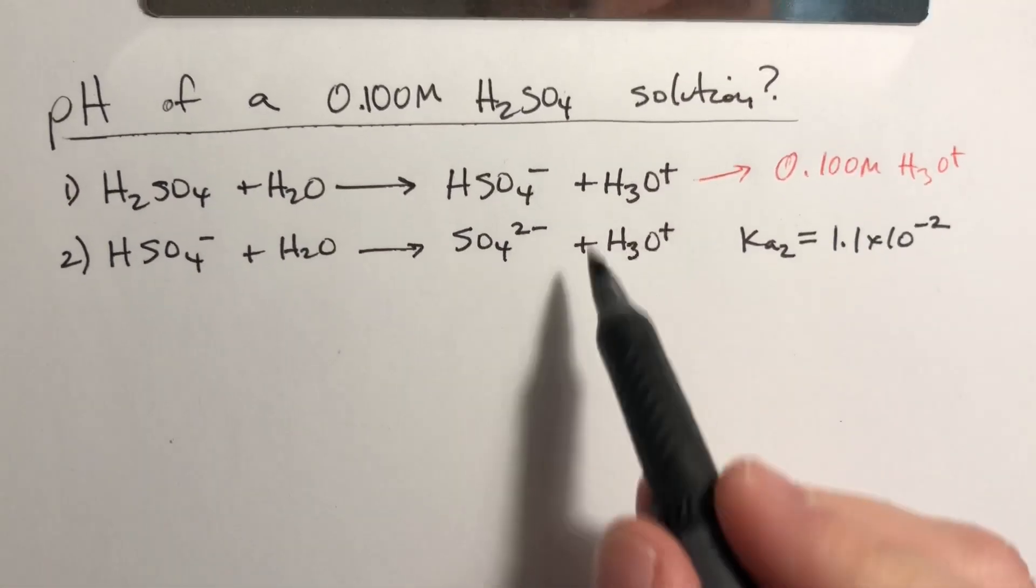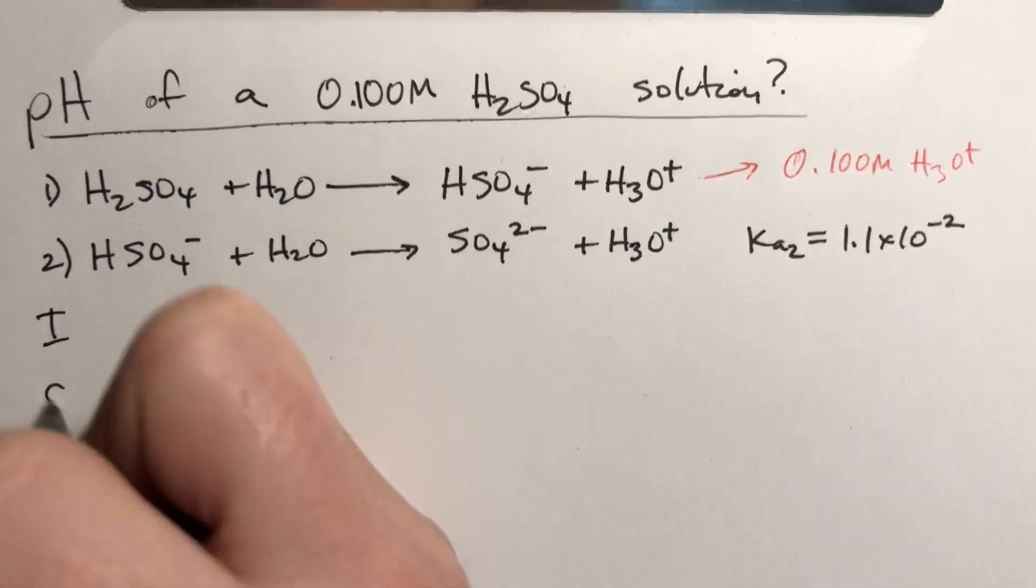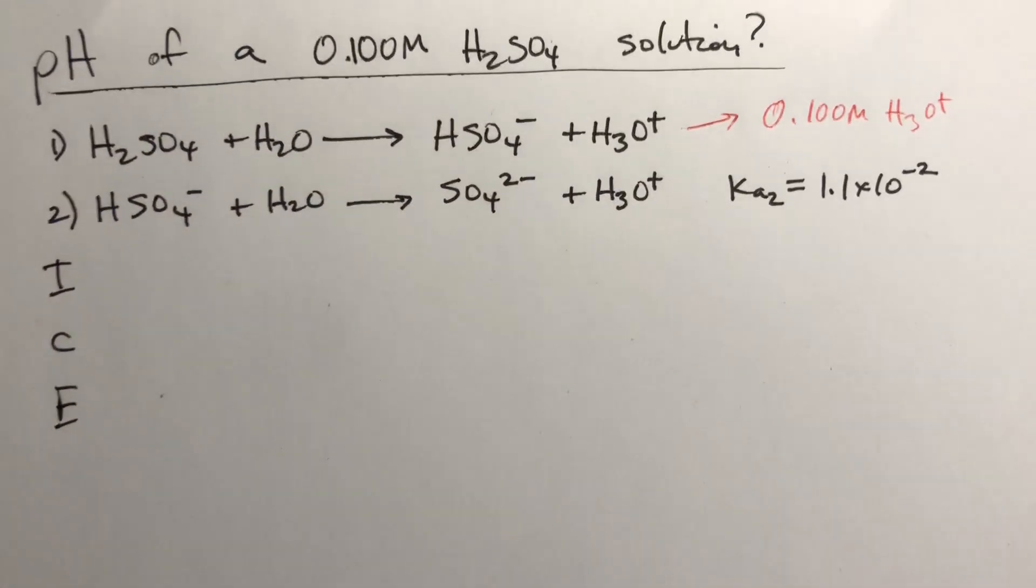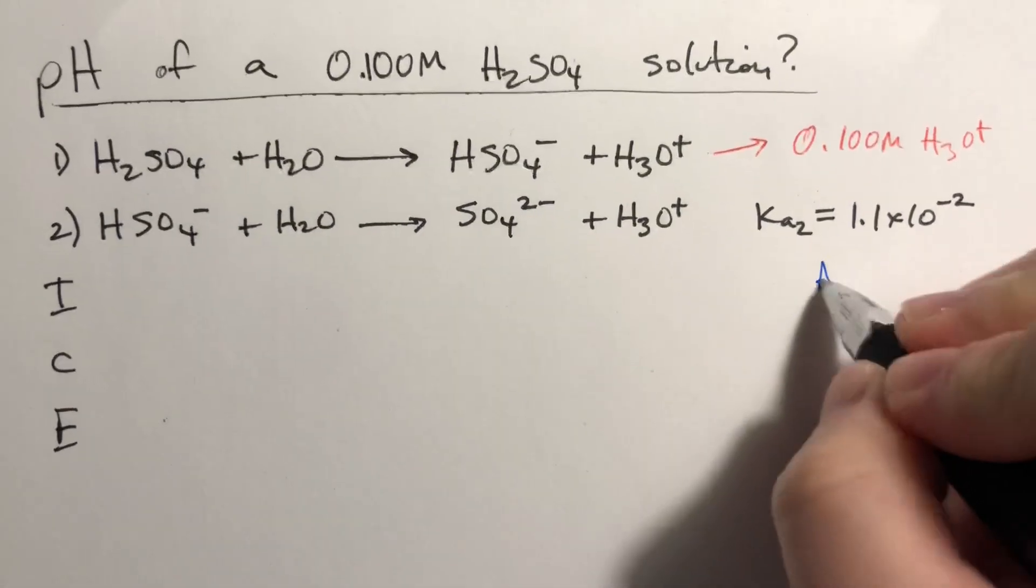Now we also need to figure out how much H3O+ is generated from the second equation. So we're going to need to do an ICE method. We also need to check the assumption. I'm going to do this off to the side.